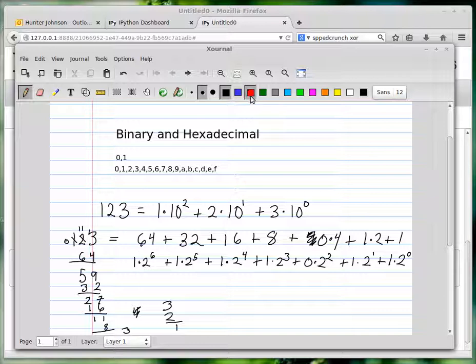If you look at what we have on this line, all of the coefficients that I'm multiplying times the powers of 2 are either 1 or 0. These are the binary digits of 123. The binary description of 123 is 1111011 in binary.